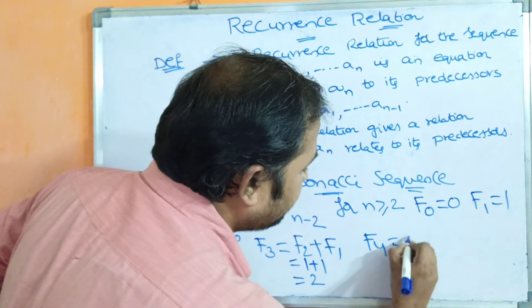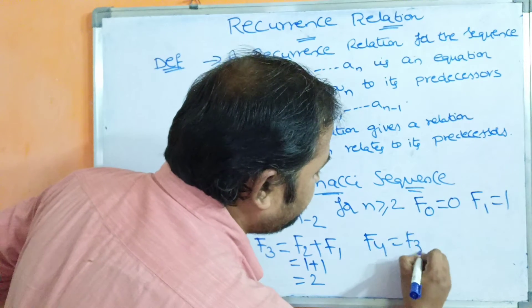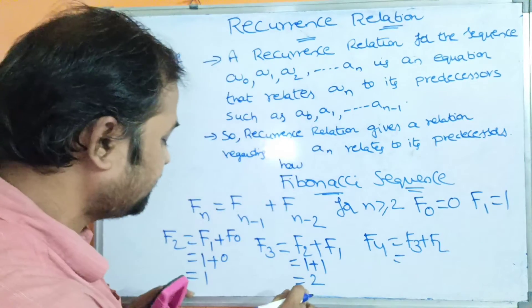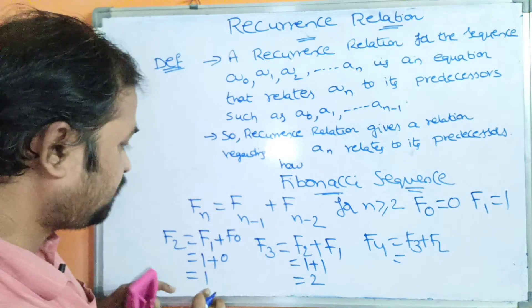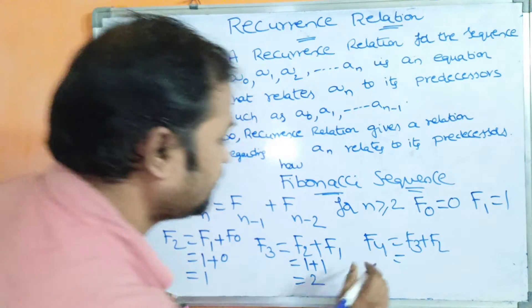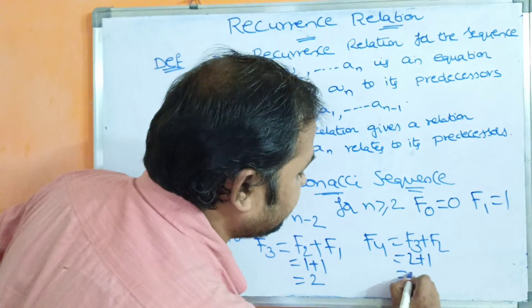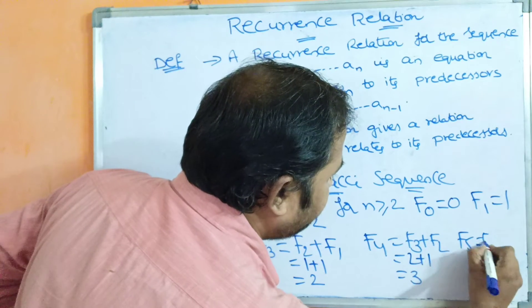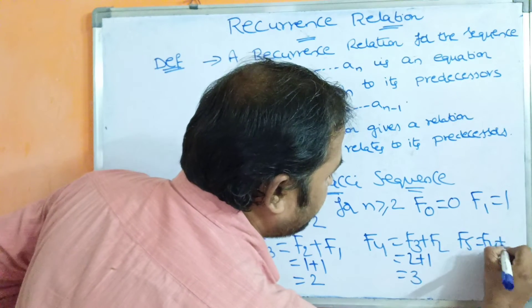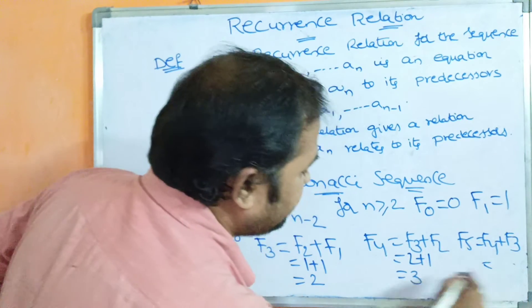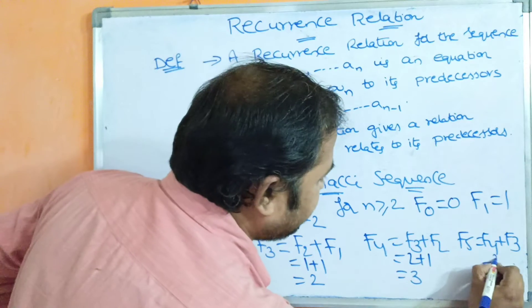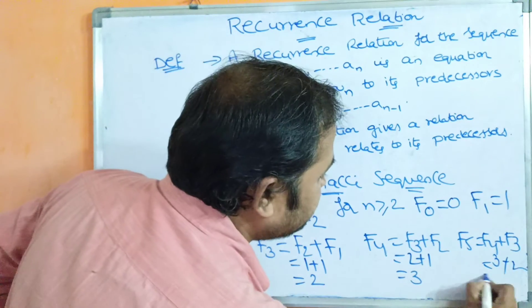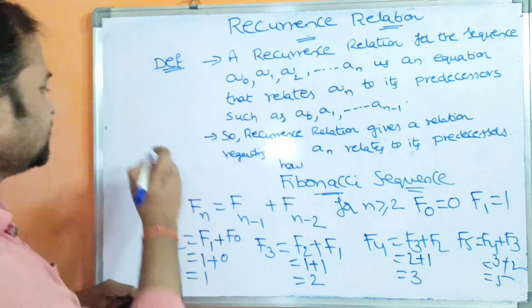What is F4? F4 = F3 + F2. F3 is 2 and F2 is 1, so 2 + 1 = 3. Likewise, let us determine F5. F5 = F4 + F3. F4 is 3 and F3 is 2, so 3 + 2 = 5.